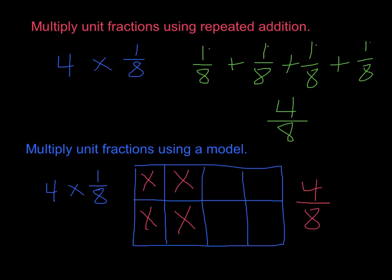So our answer to this problem is 4 eighths. With the model we can also see that 4 eighths is the same thing as 1 half. This is how we multiply a unit fraction using a model.